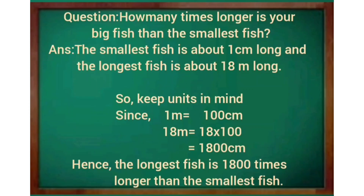How many times longer is your big fish than the smallest fish? The smallest fish is about 1 cm long and the longest fish is about 18 m long. Keep units in mind: since 1 m equals 100 cm, 18 m equals 18 multiplied by 100, that is 1800 cm. Hence, the longest fish is 1800 times longer than the smallest fish.